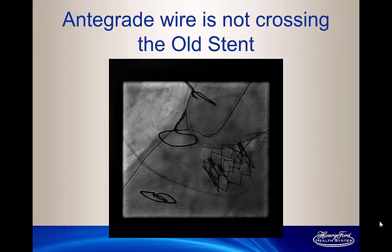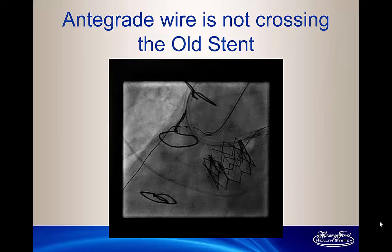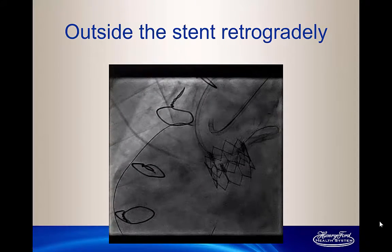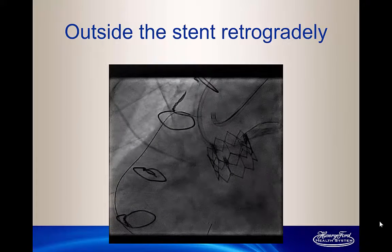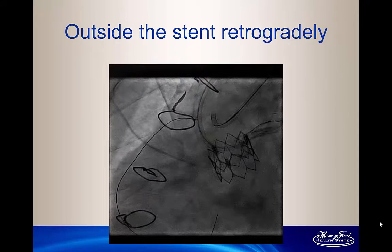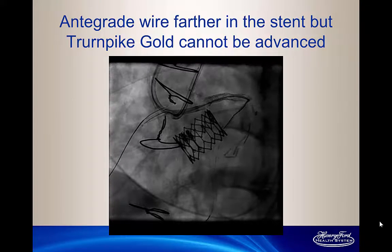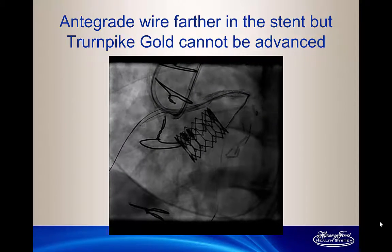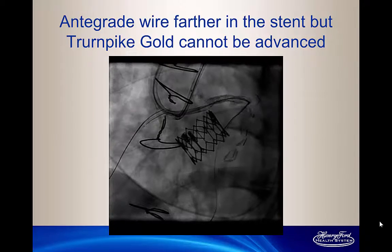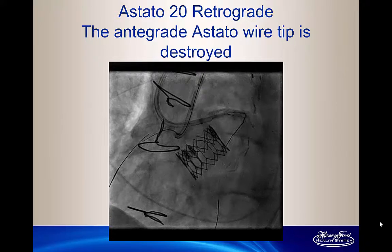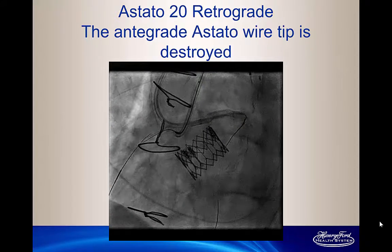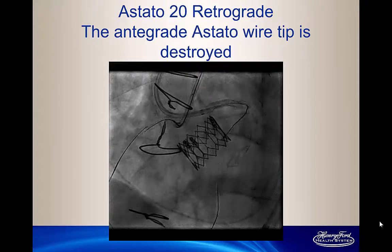We finally decided to go outside the stent retrograde, trying another very supportive wire. I actually tried a Stingray wire antegrade, and it went farther, but I could not do anything with it. Trying retrograde again, the wire was still going outside the stent but now from the inferior aspect. I tried the Stingray wire again — it went farther, but I could not advance anything behind the wire to get through the stent. The tip of the Stingray wire was damaged. This is a 20-gram wire trying to puncture through, with the Turnpike Gold behind it, and it would not go.